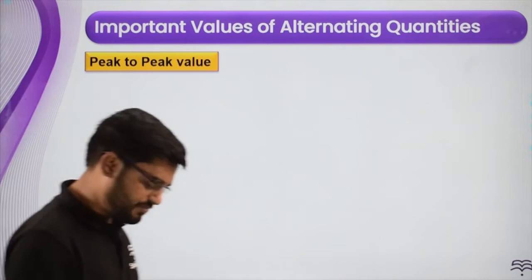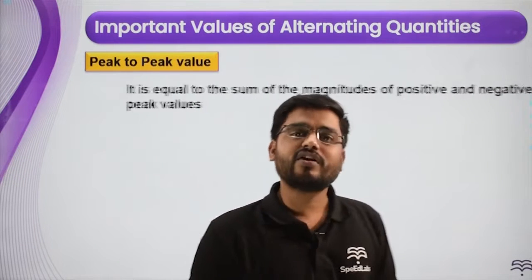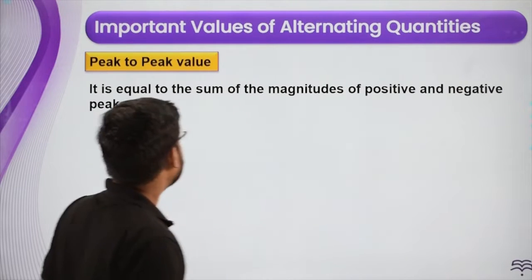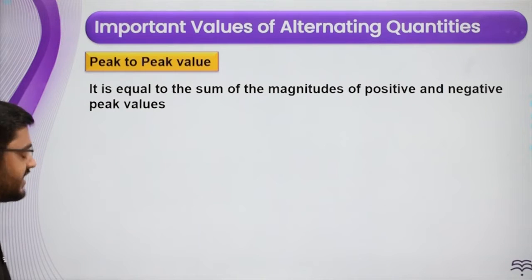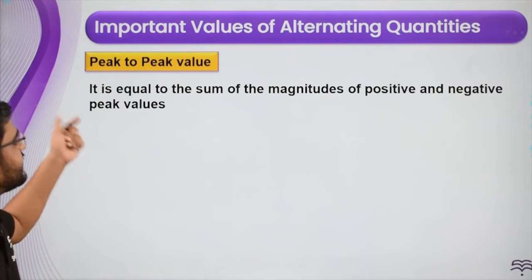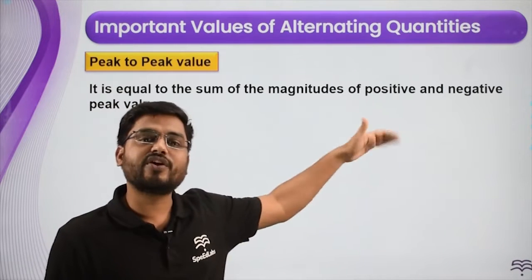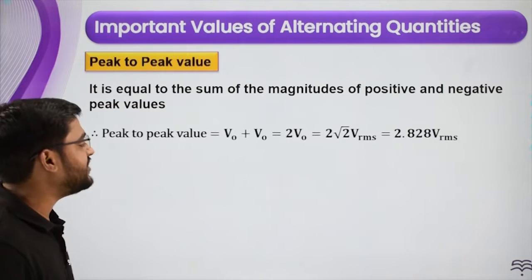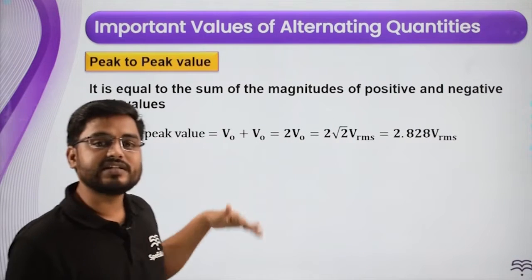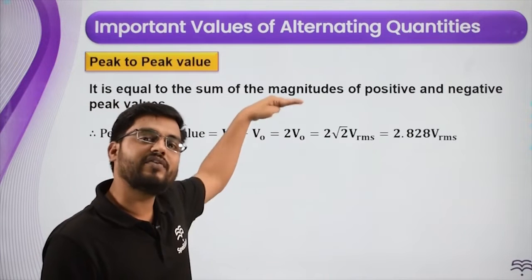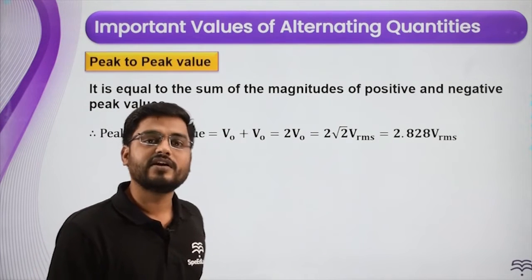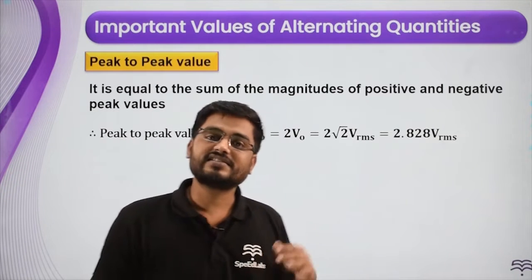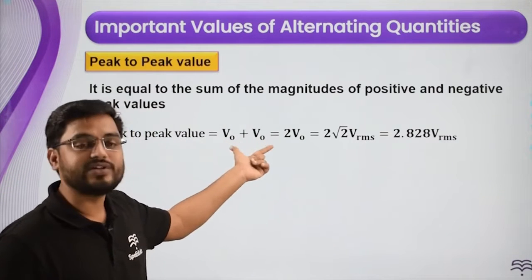The next is peak-to-peak value. Peak value is amplitude. The graph goes both ways — it is equal to the sum of the magnitude of positive and negative peaks. We are just talking about magnitude, so it is just two times amplitude. Peak-to-peak value means if the signal goes up by V₀, it also goes down by V₀, so peak-to-peak value of the voltage is simply the peak value multiplied two times.